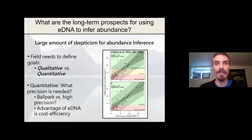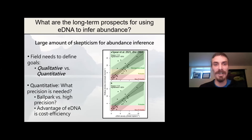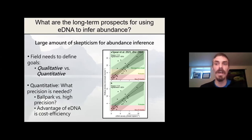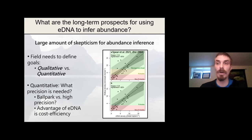I want to have a chat about what the long-term prospects are for using eDNA to infer abundance. I think there's a large amount of skepticism for the inference of abundance from eDNA concentration, and I think it's going to be important moving forward for the field to define goals — are we interested in qualitative comparisons or quantitative?